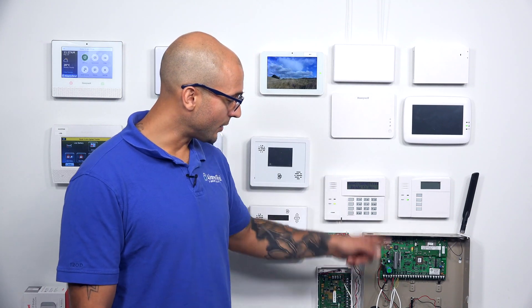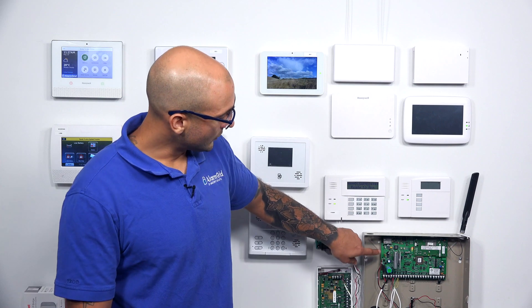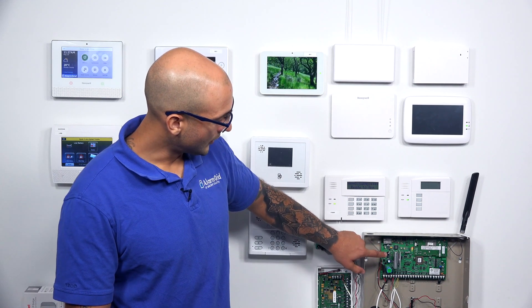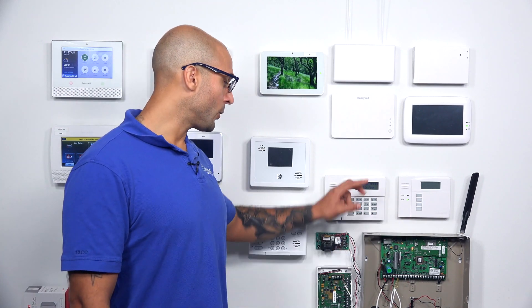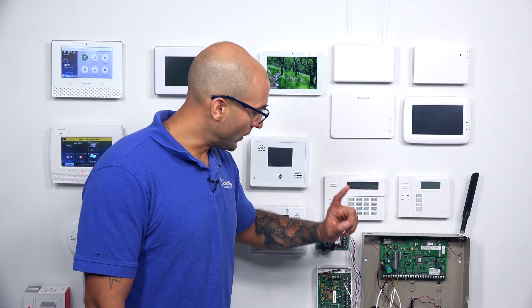To do this, there's a few things that we have to do. The first thing is we're going to power down the system. Then we actually have to move our jumper on the board to the off position, which is going to turn off all of the onboard IP and cellular communication. So you will not be able to use the Ethernet jack. After we do that, we're going to install the communicator and then wire it up to the ECP bus.